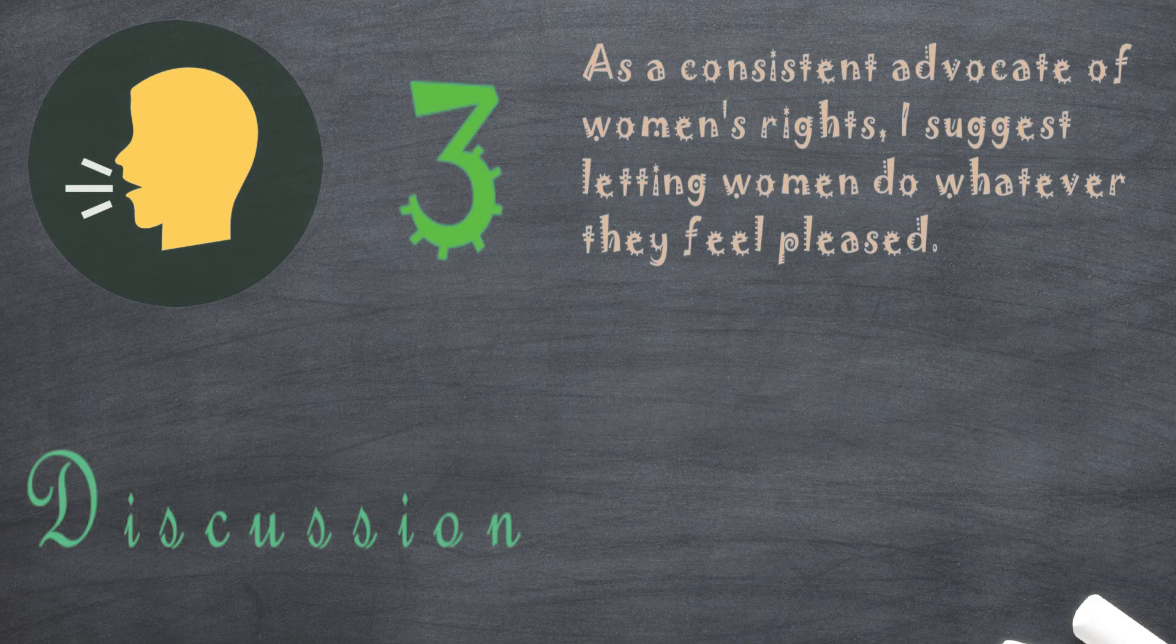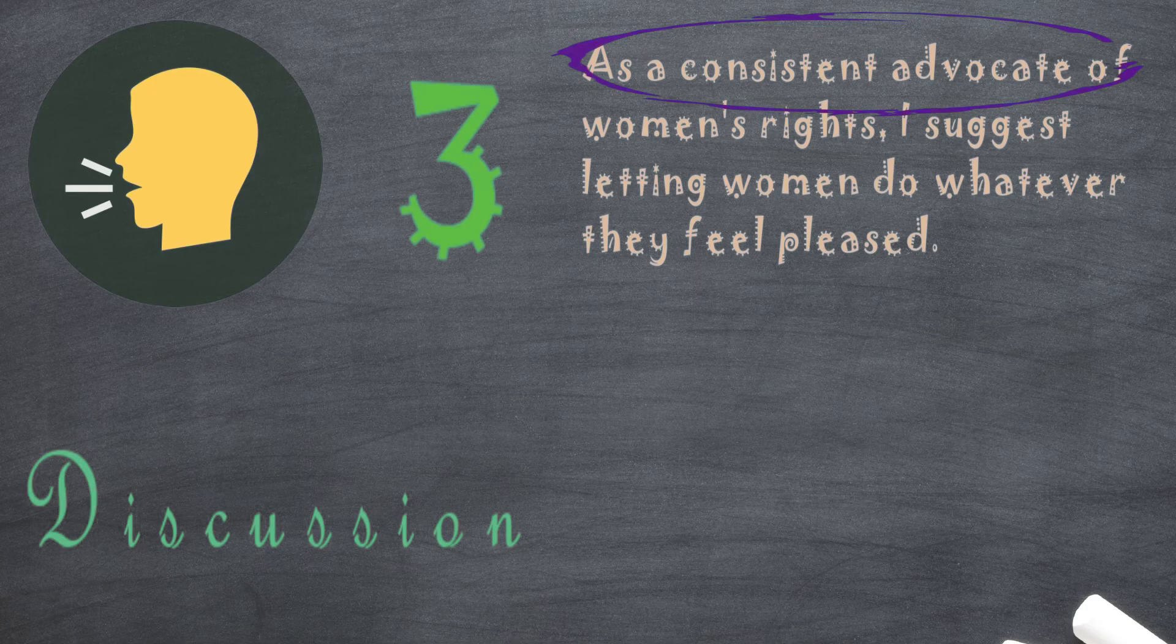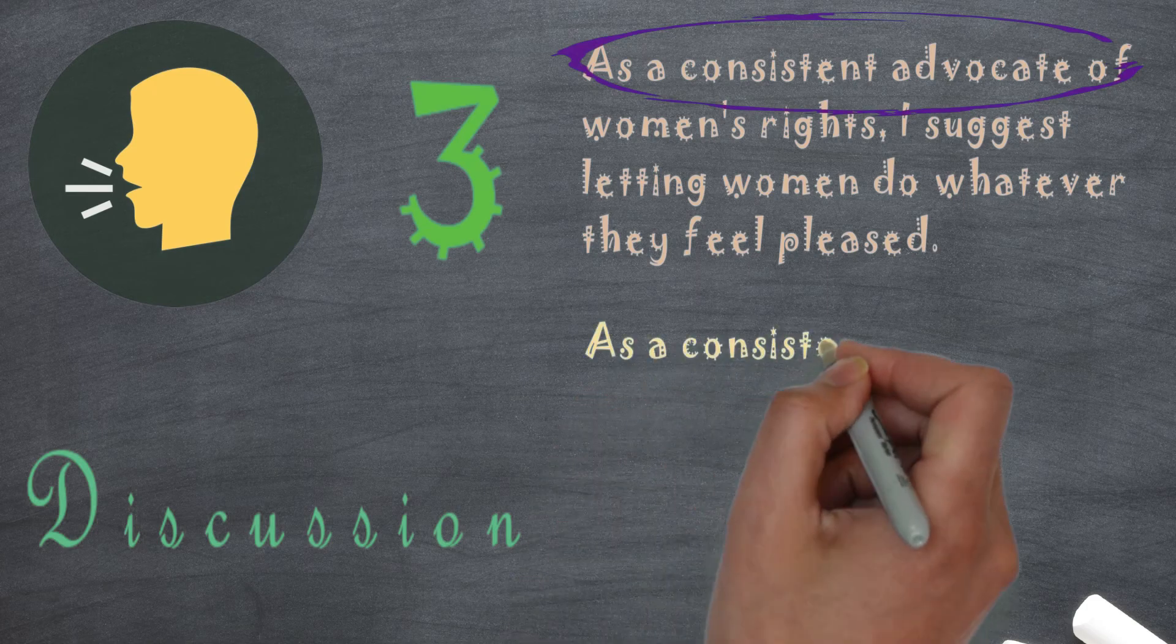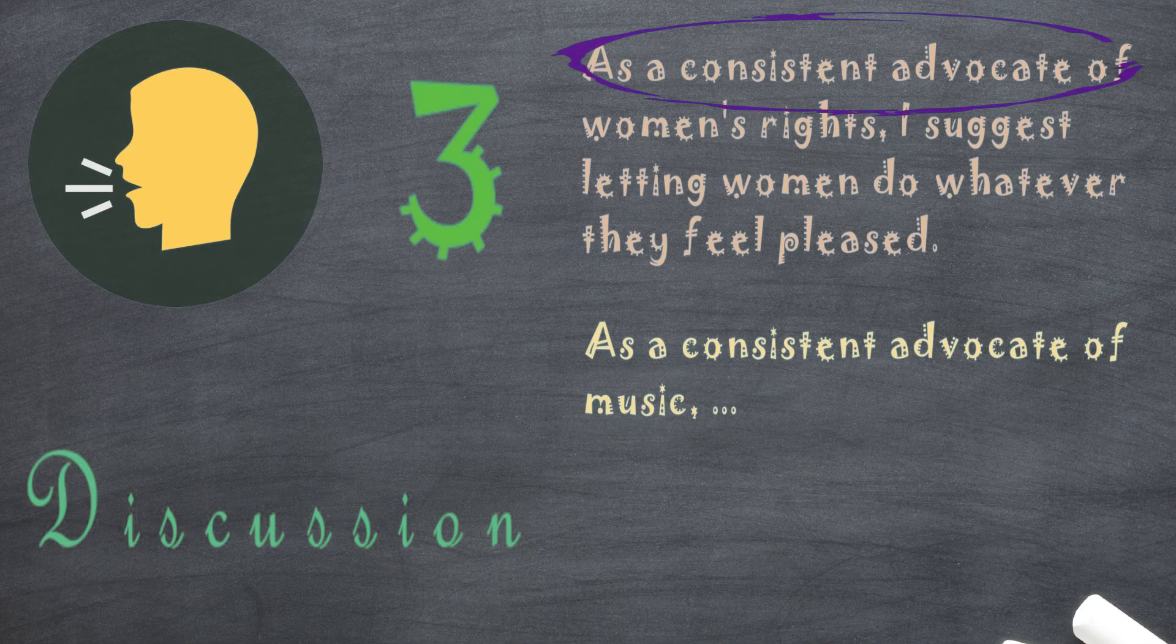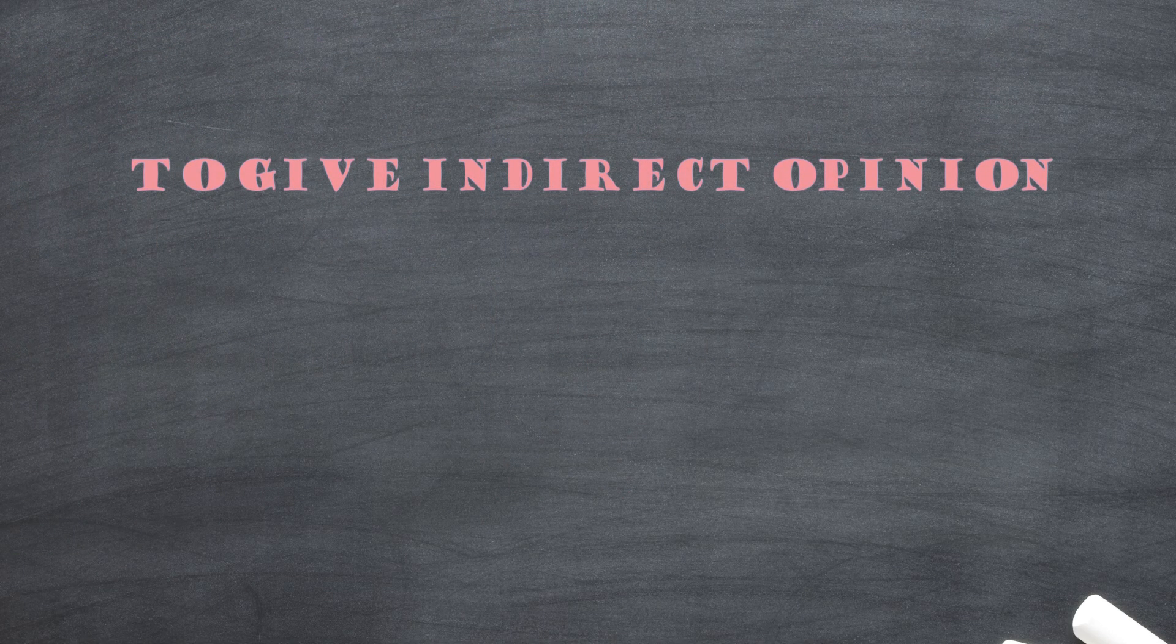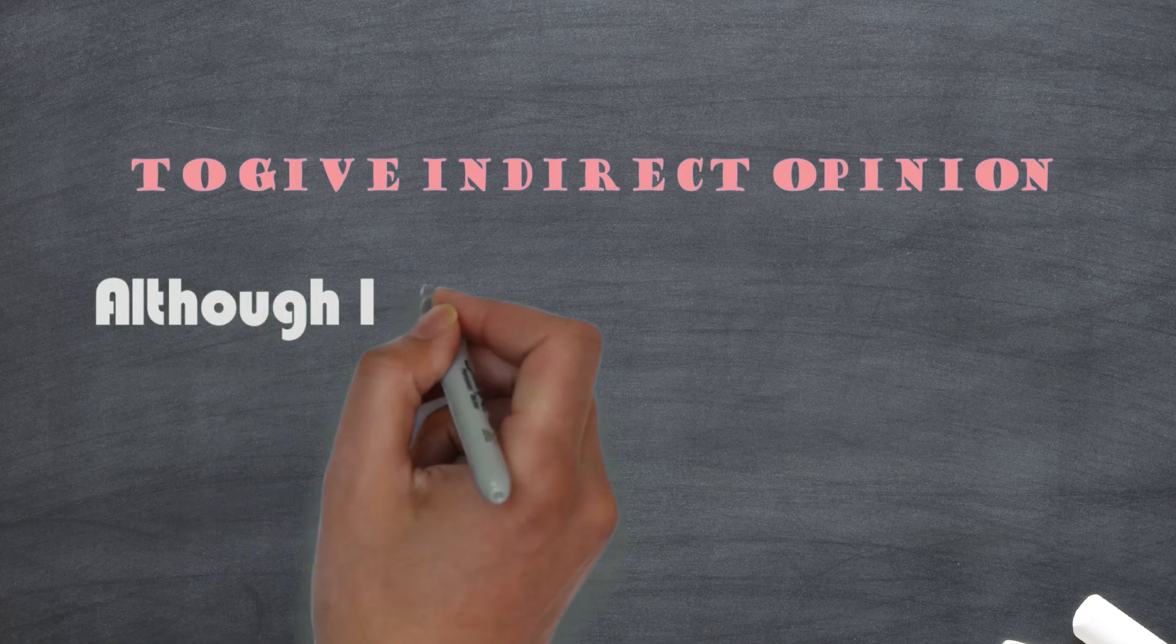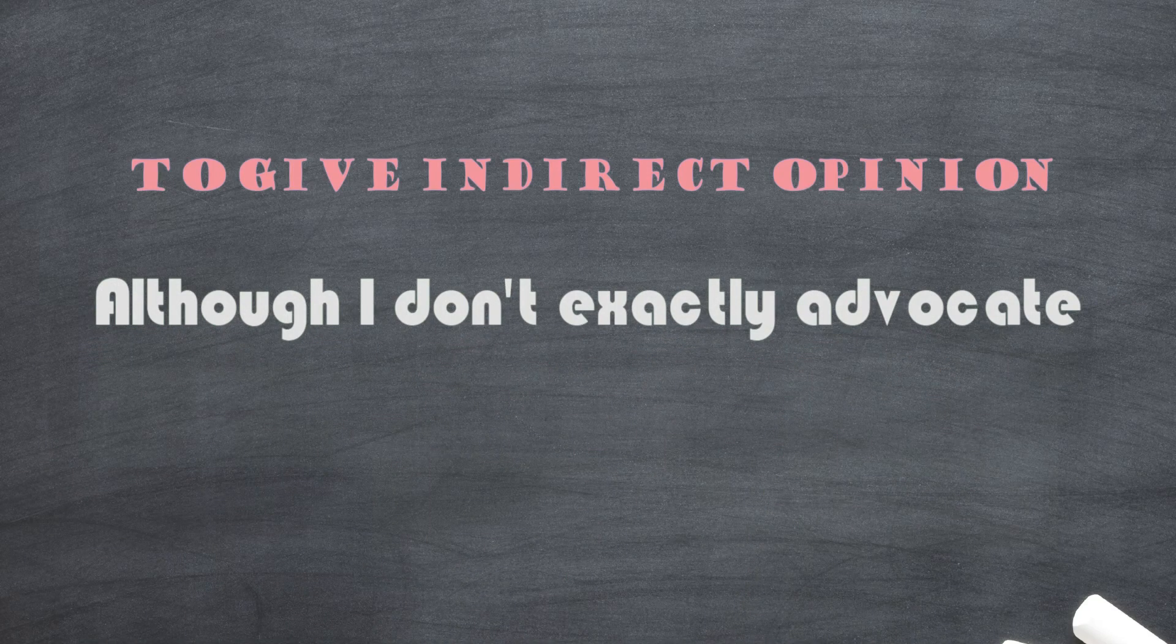So, instead of saying I think, we can say as a consistent advocate of something. Like, if they ask me about the benefit of listening to music, then I can say as a consistent advocate of music. Now, in some cases, we have to give an opinion but not too directly so that we can avoid being too subjective, right?